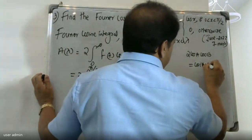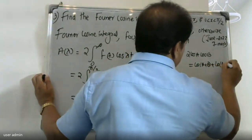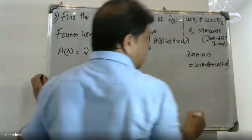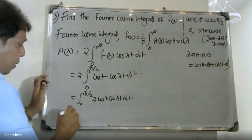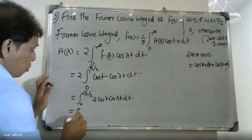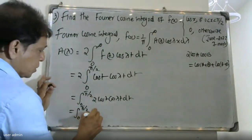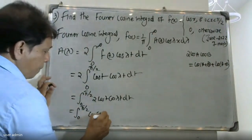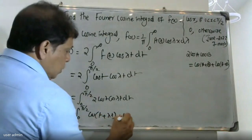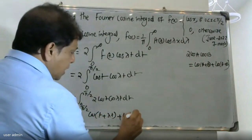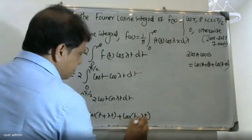We apply the product-to-sum formula: 2 cos(A) cos(B) = cos(A+B) + cos(A-B). So the integrand becomes cos(t + λt) + cos(t - λt), integrated from 0 to π/2.